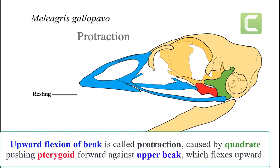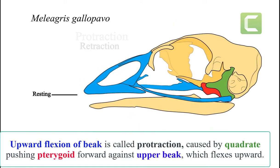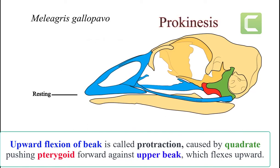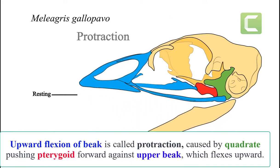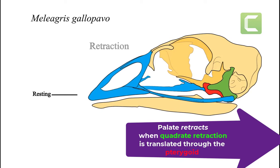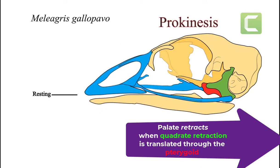Upward flexion is called protraction, caused by the quadrate protraction in green, pushing the pterygoid in red forward against the upper beak unit, which flexes upward. When the unit moves downward beyond the resting point, the palate is retracted by the retracting quadrate and pterygoid.